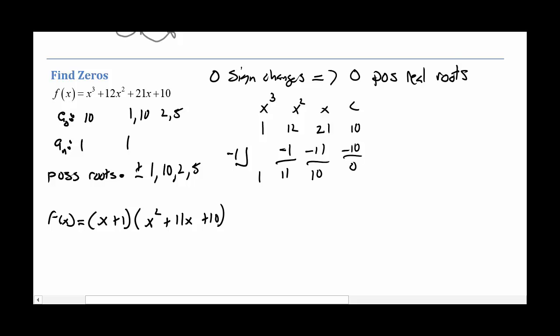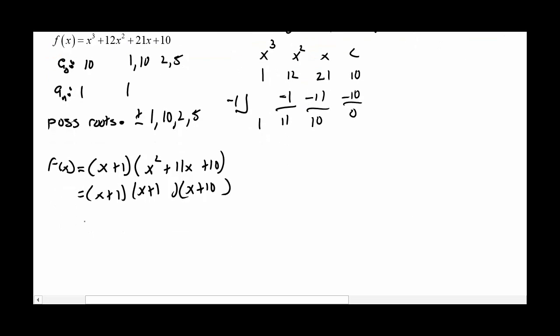Okay. Now, that looks like something that we can factor. Let's see, 10, yeah, 10 and 1. So x plus 1 and x plus 10. Okay. Notice we have a multiplicity. We have a repeated factor of x plus 1 squared times x plus 10.